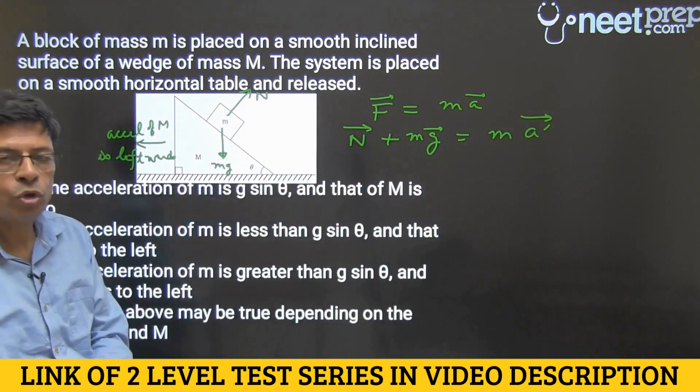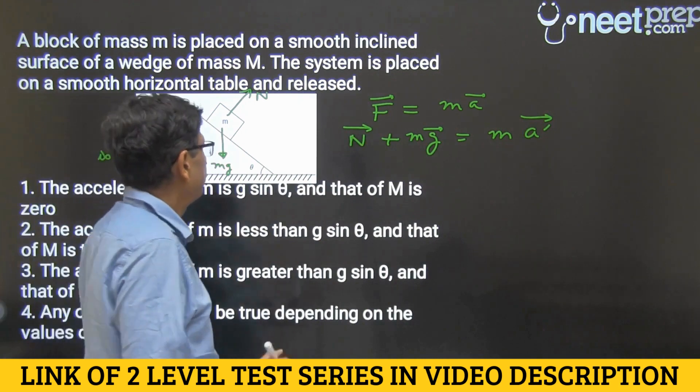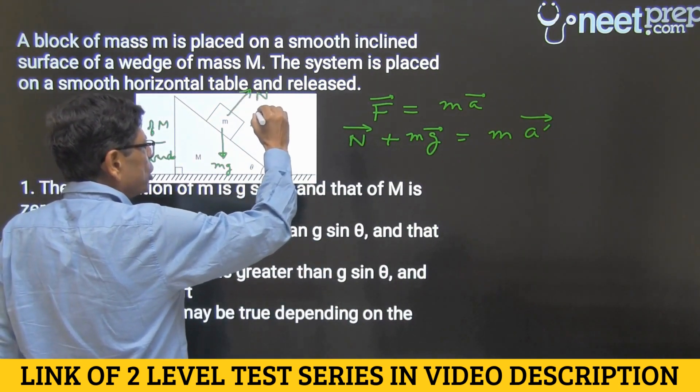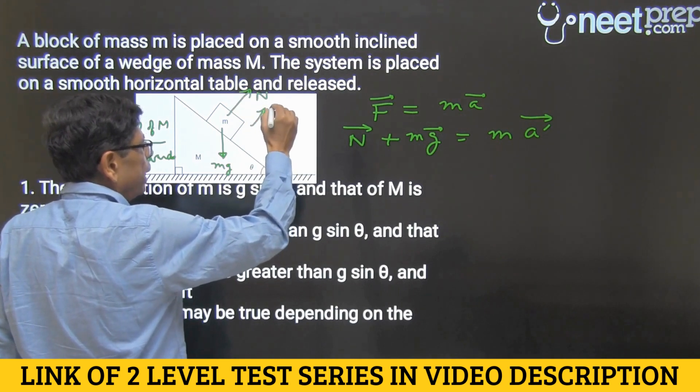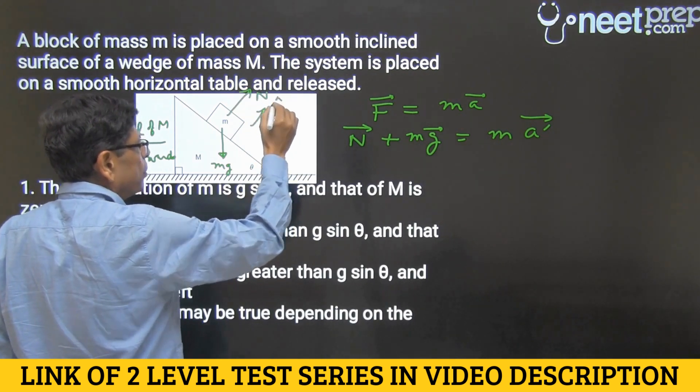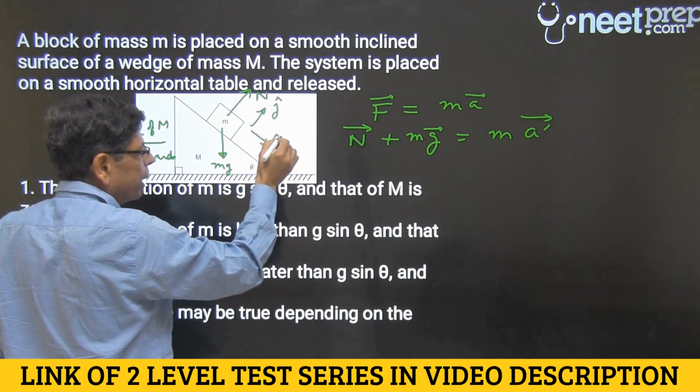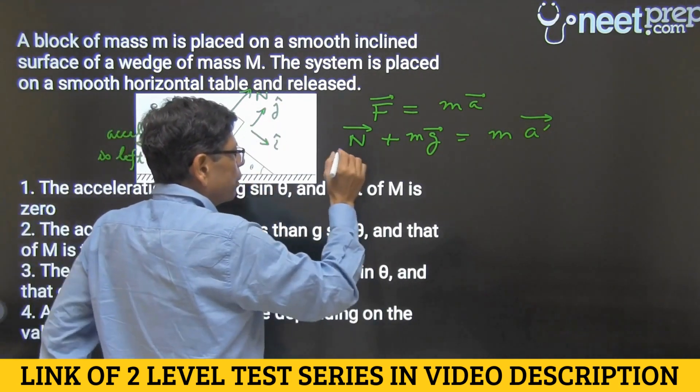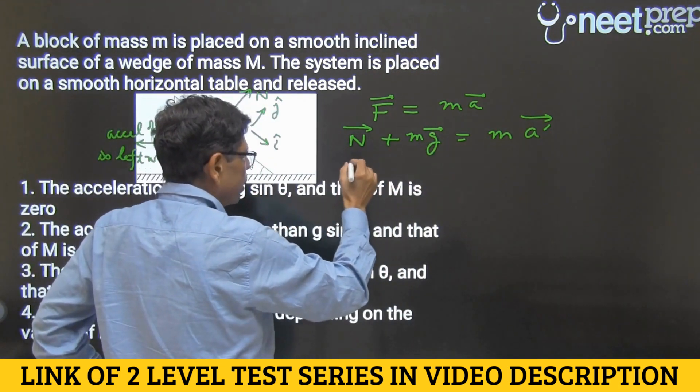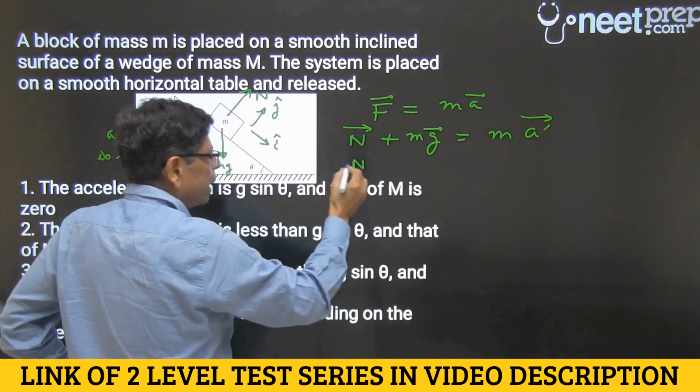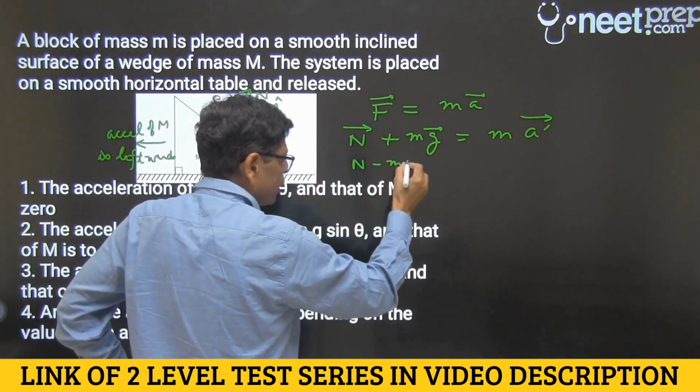Now calling a unit vector in the direction of n as j cap and one along the incline of the wedge as i cap, we can write this in the following manner: n minus mg cos theta